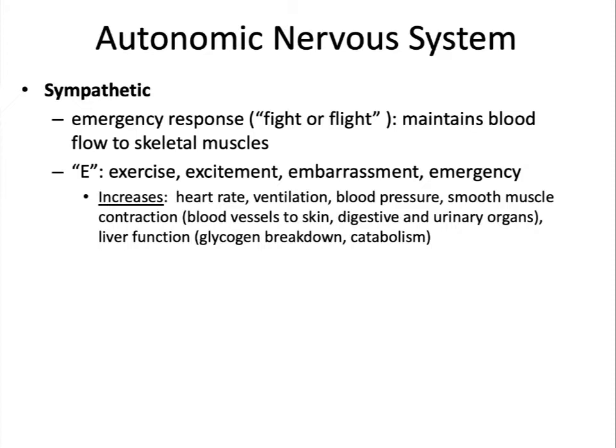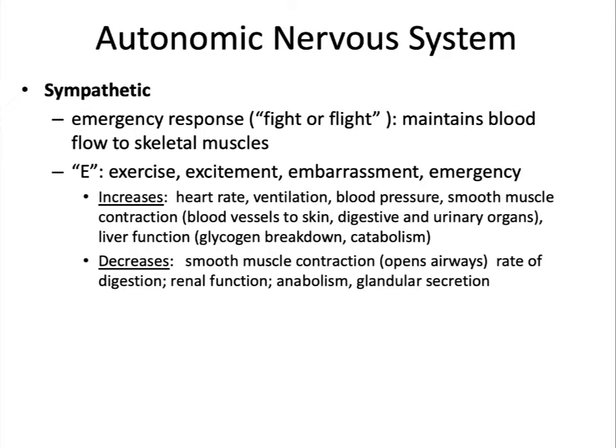The sympathetic nervous system also increases liver function, encouraging glycogen breakdown and release of glucose into the bloodstream. However, not every system is increased. It also decreases smooth muscle contraction in other areas, such as in the airways — decreasing contraction of the airways actually opens them, allowing the maximum amount of oxygen to get into the lungs. The sympathetic nervous system also decreases renal function and glandular secretion.